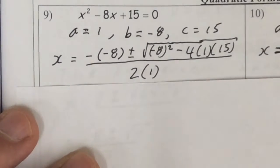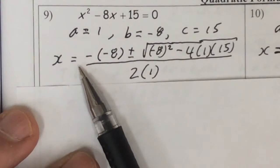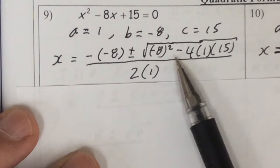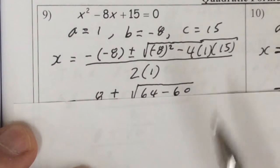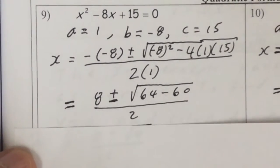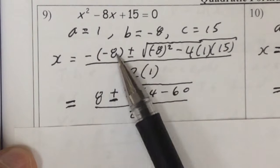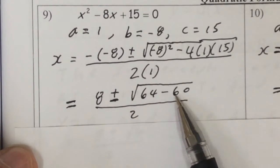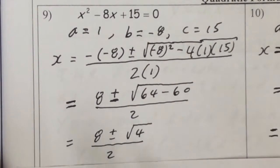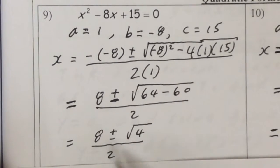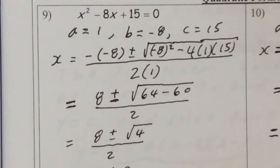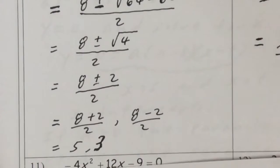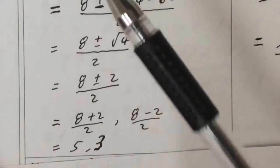Plugging them into the quadratic formula. So negative of negative 8, negative 8 squared minus 4ac over 2a. So the negative 8 becomes positive 8 now, plus or minus 64 minus 60, all over 2. And that's 8 plus or minus root 4 all over 2. And we get this nice answer here, which is 5 and 3.